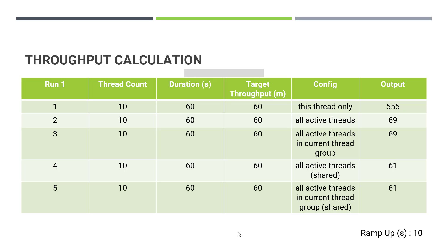In the third run, with the same thread count, duration, and target throughput, the configuration is 'All Active Threads in Current Thread Group'. The keyword here is 'current thread group' — it will try to achieve the throughput by dividing the number among all the active threads in the current thread group. Run two and run three will always achieve a little higher than the target throughput because of the non-shared algorithm.